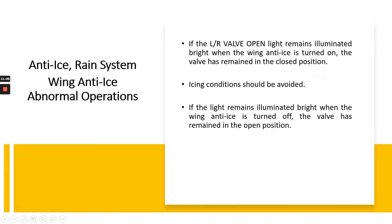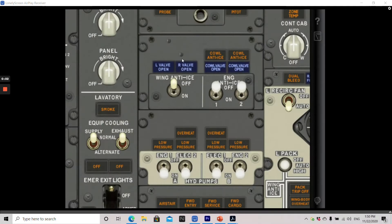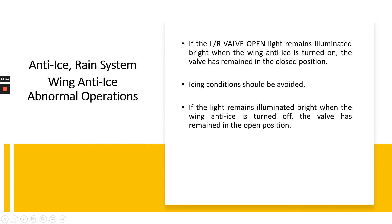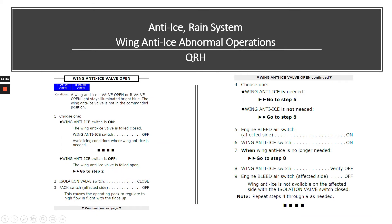Abnormal operations for wind anti-ice: if the left and right valve open lights remain illuminated bright when wind anti-ice is turned on, the valve has remained in the closed position — icing conditions should be avoided. If the light remains illuminated bright when wind anti-ice is turned off, the valve has remained in the open position. The QRH non-normal checklist for wind anti-ice valve open: condition — a wind anti-ice left valve open or right valve open light stays illuminated bright blue. The wind anti-ice valve is not in the commanded position.